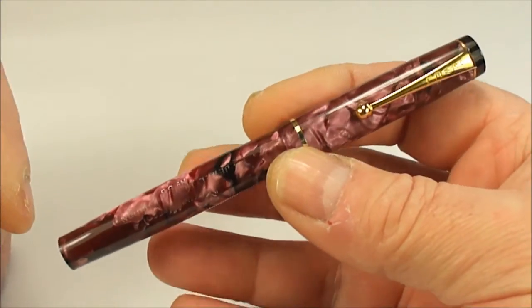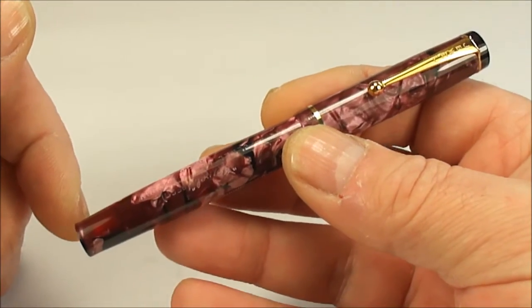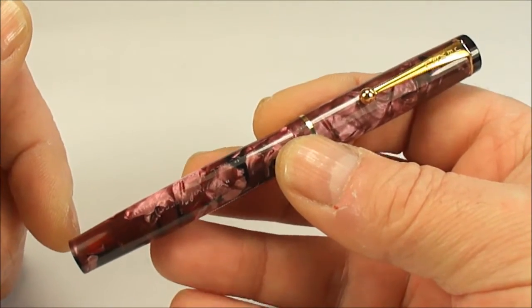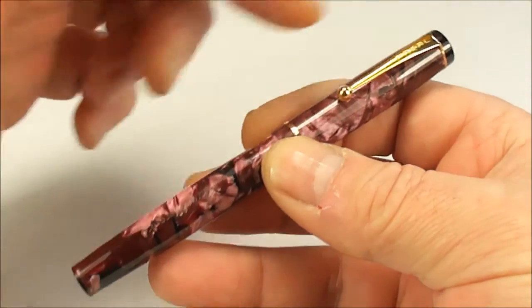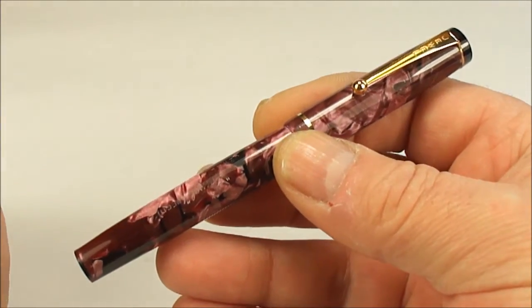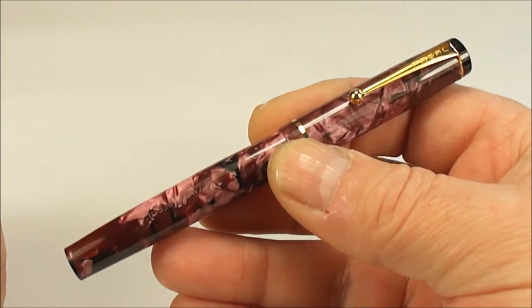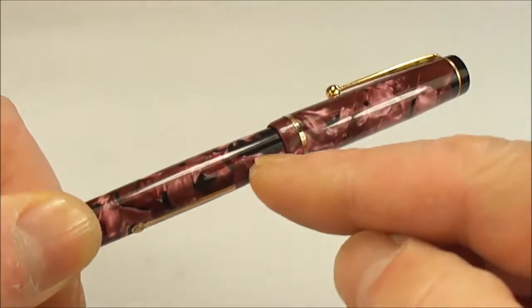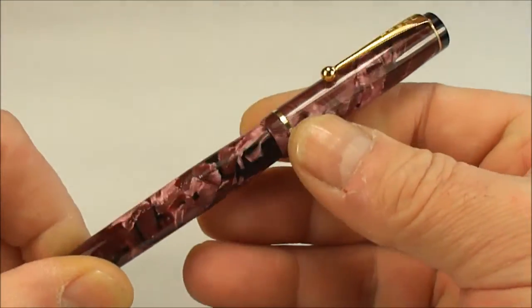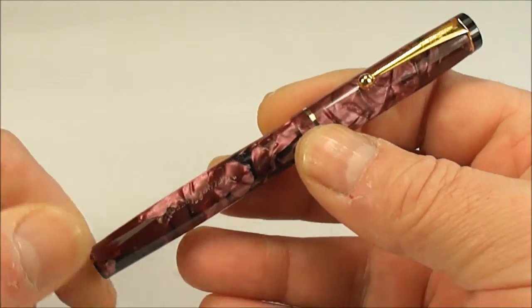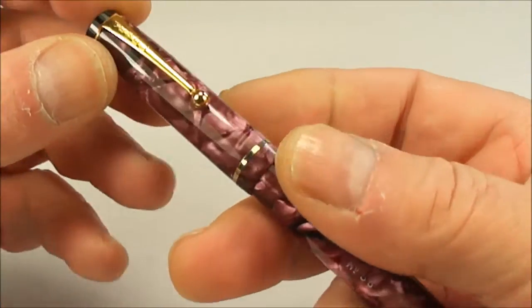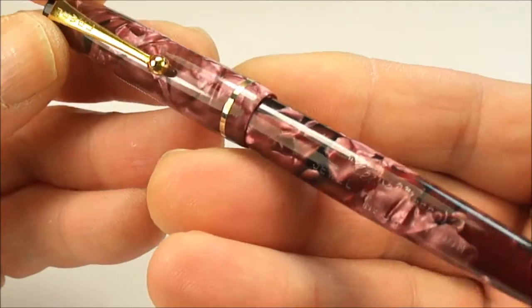The size of the pen from the top of the cap to the bottom of the barrel is around 121 millimeters capped. The diameter of the barrel is around 11 millimeters. As I say, it comes in this beautiful mauve coloring.